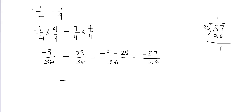When we write the mixed fraction, the quotient becomes our whole number, the remainder becomes the fraction's numerator, and the divisor becomes the fraction's denominator. So our final answer is negative 1 and 1 over 36. This is another way to add or subtract fractions with unlike denominators. That's all in this video.